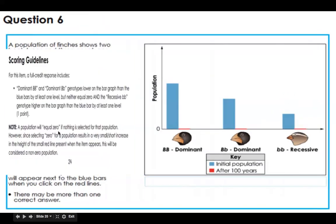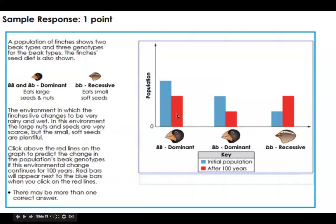Note, a population will equal zero if nothing is selected for that population. And we didn't do that. So remember, we made sure to make, we knew that these wouldn't go extinct. There was still some of its food, but definitely the numbers should go down.